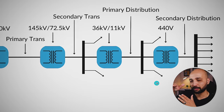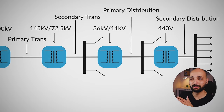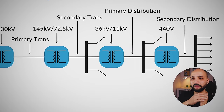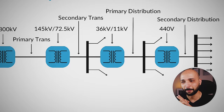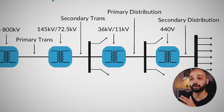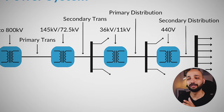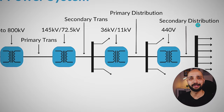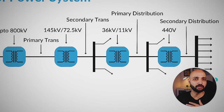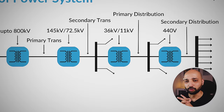After primary distribution, the power is further stepped down to 440 volts. This is delivered through the distribution poles you see on streets. This phase of the power system is called secondary distribution, and from here power is given to different consumers like households, residential buildings, colleges, and other buildings that need power.